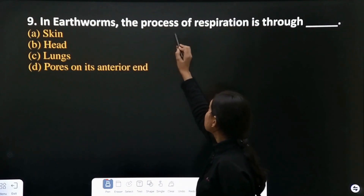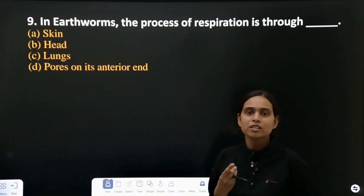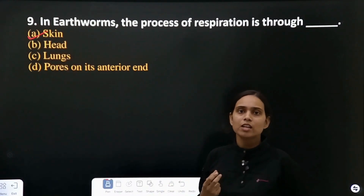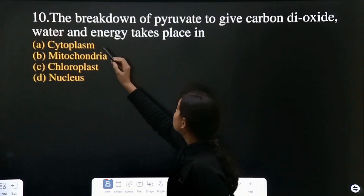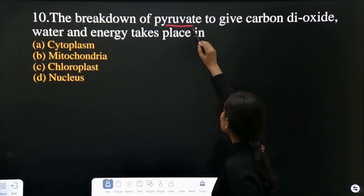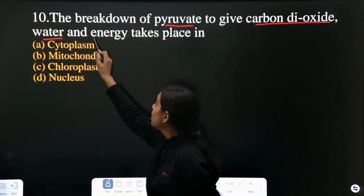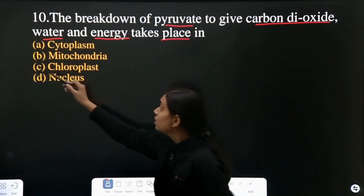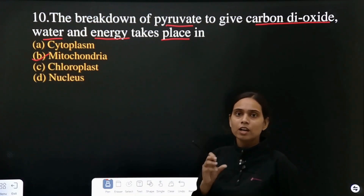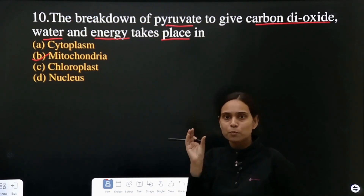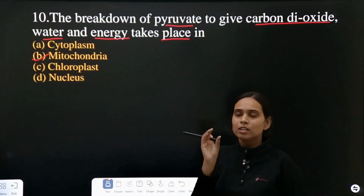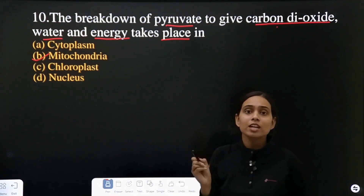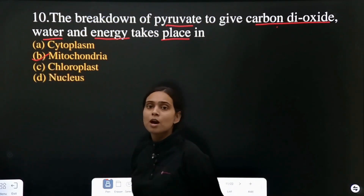Question 9: in earthworm, where does the process of respiration take place? Earthworm respires through the skin. Question 10: the breakdown of pyruvate gives carbon dioxide, water, and energy — where does this process take place? It takes place in the mitochondria. Glucose converts into pyruvate in the cytoplasm, and pyruvate is converted into carbon dioxide, water, and energy in the presence of oxygen in the mitochondria. So the answer is mitochondria.